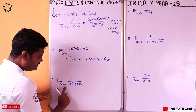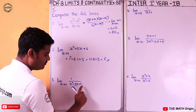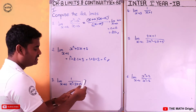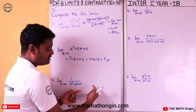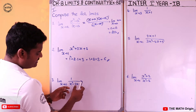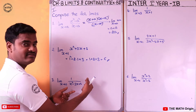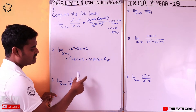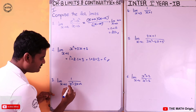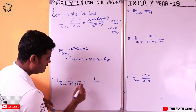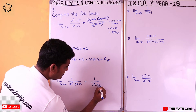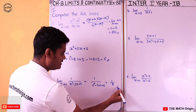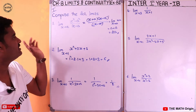Third question: limit x tends to 0 of 1 by (x² - 3x + 2). Here we only have a numerator of 1, so we check if the denominator is zero at x = 0. Substituting directly: 1 by (0² - 3(0) + 2) = 1 by 2. We completed the third question.